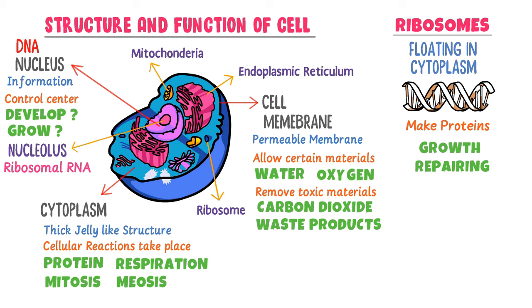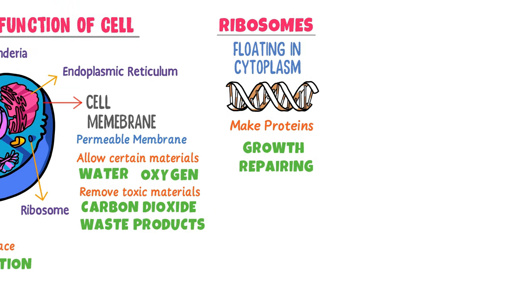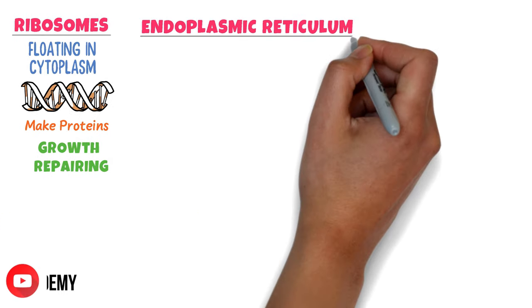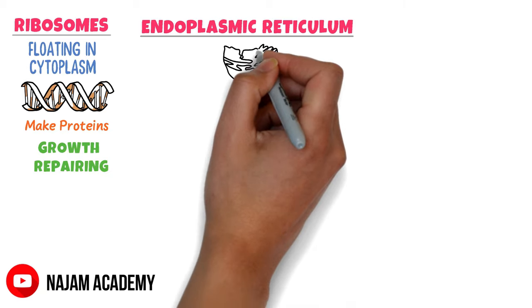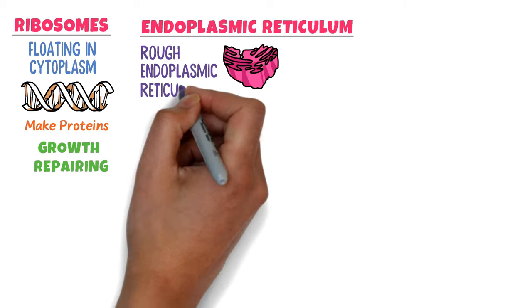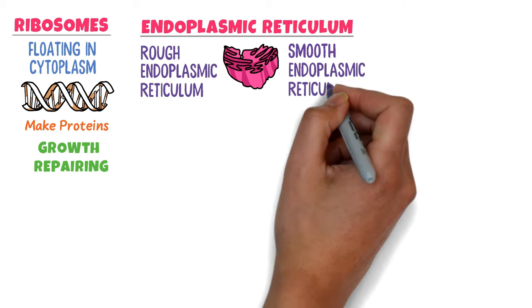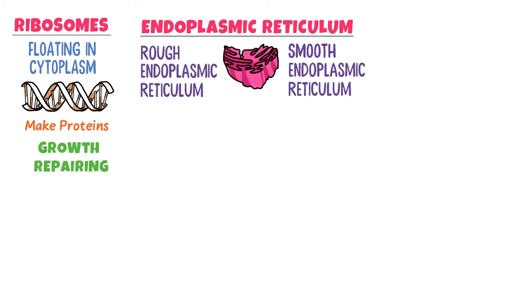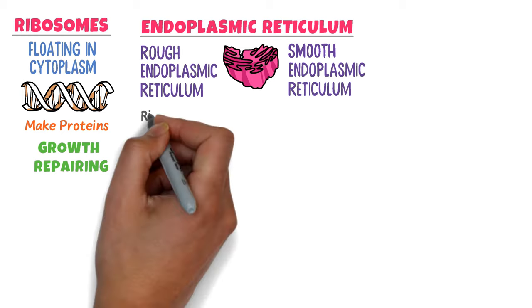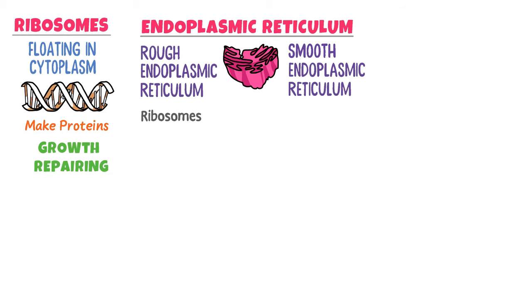To learn about ribosomes and protein formation, we must understand endoplasmic reticulum. Endoplasmic reticulum is of two types: rough endoplasmic reticulum and smooth endoplasmic reticulum. The main difference between them is that rough endoplasmic reticulum contains ribosomes, while smooth endoplasmic reticulum does not contain any ribosomes.